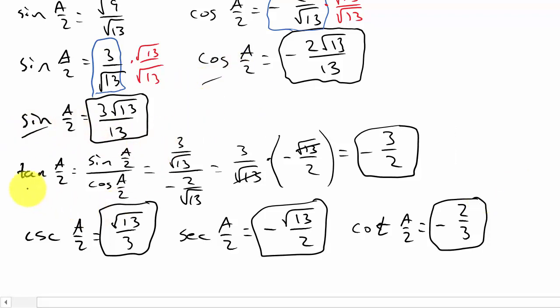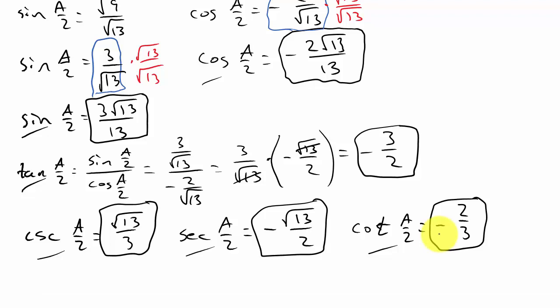And those are all six trig functions of A over 2: sine, cosine, tangent, cosecant, secant, and cotangent. I hope this video helped. If you liked it, please subscribe.